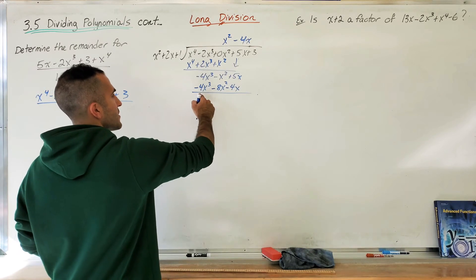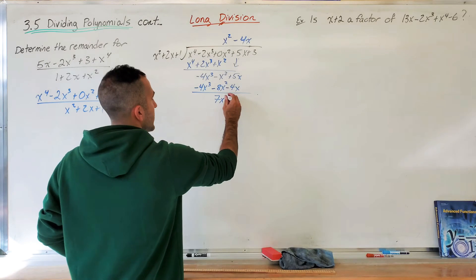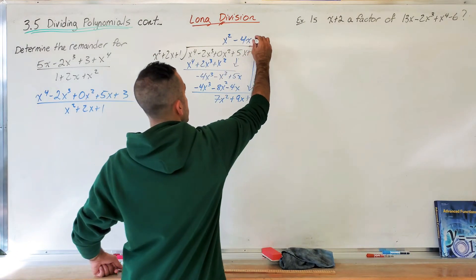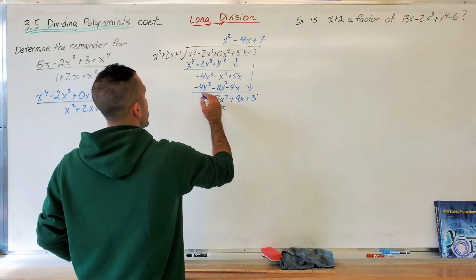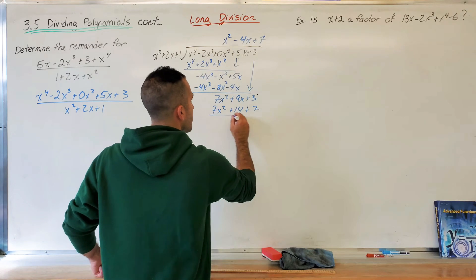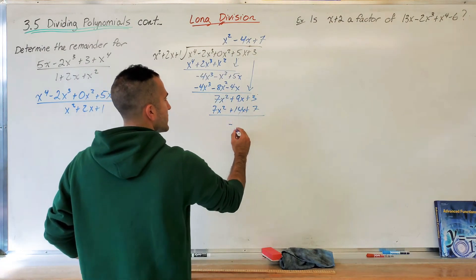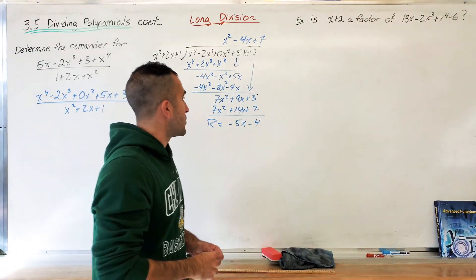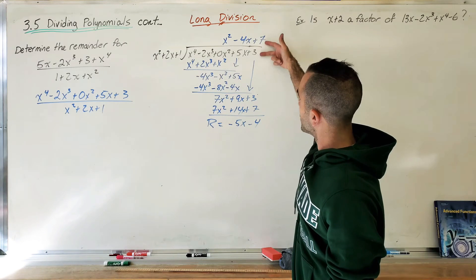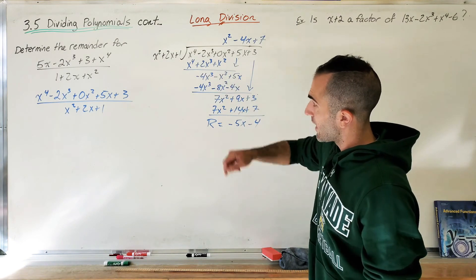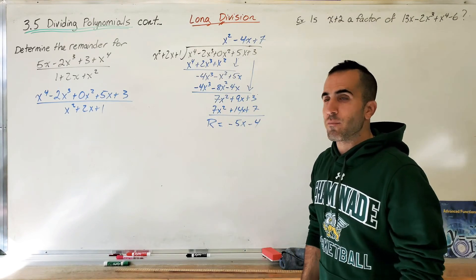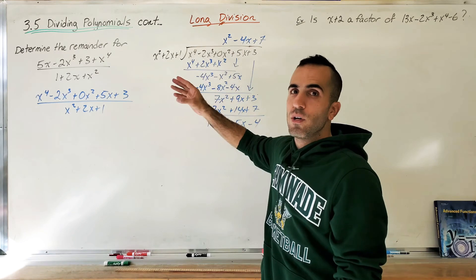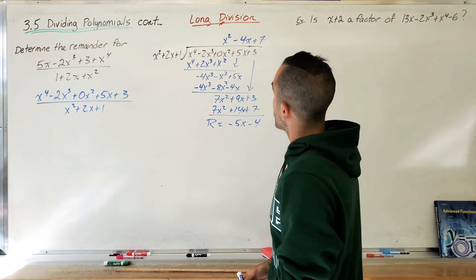Draw a line and subtract. Those cancel. This minus this gives 7x². This minus this gives 9x. Bring down the 3 and do it again — I need 7, so I write 7x². Multiply: 7x² gives 14x and 7. Subtract: gone. Left with negative 5x minus 4. There's nothing left to divide into because I'm out of terms, so negative 5x minus 4 is my remainder. This is also an example where we can't use synthetic division because the divisor is not linear — it has degree 2, not degree 1.